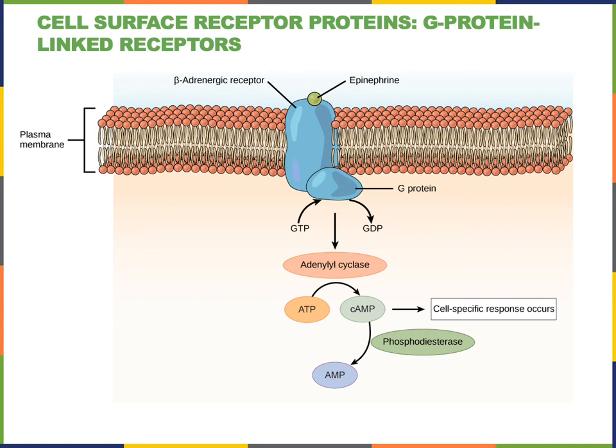In the phosphorylation cascade activated by the beta-adrenergic receptor to stimulate glycogenolysis, protein kinase A will phosphorylate another kinase known as glycogen phosphorylase kinase. Then glycogen phosphorylase kinase will phosphorylate glycogen phosphorylase, the enzyme that catalyzes hydrolysis of the polysaccharide glycogen to release glucose monomers.